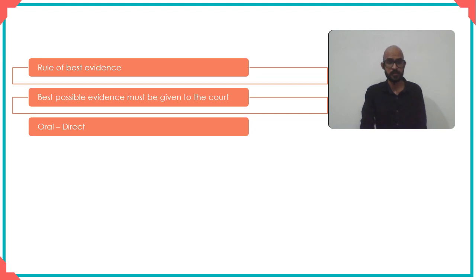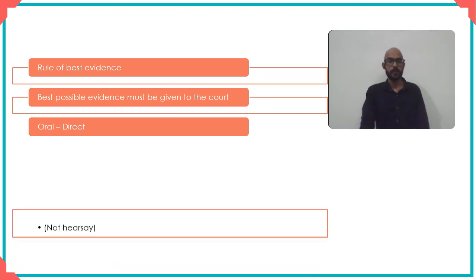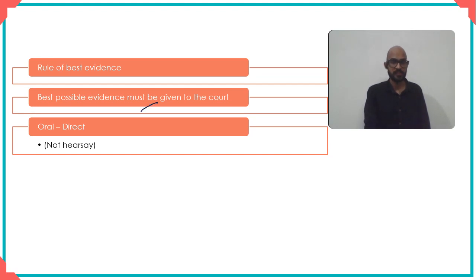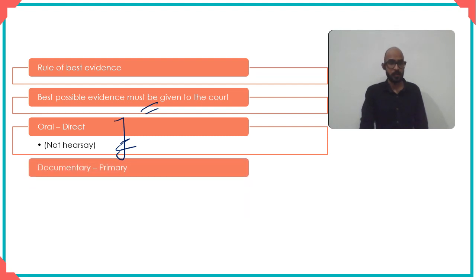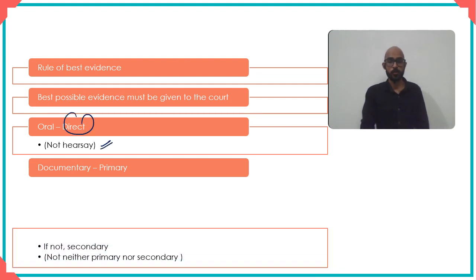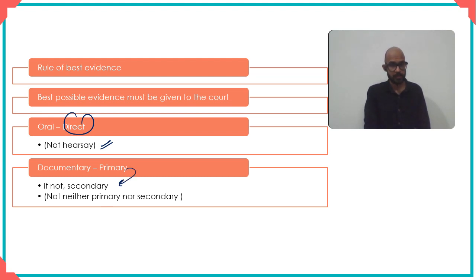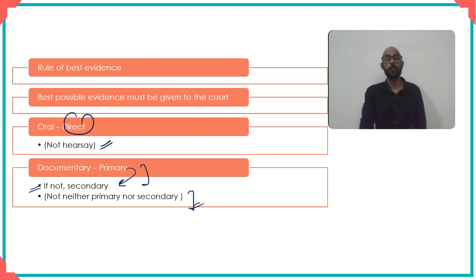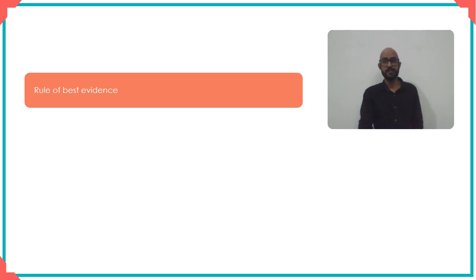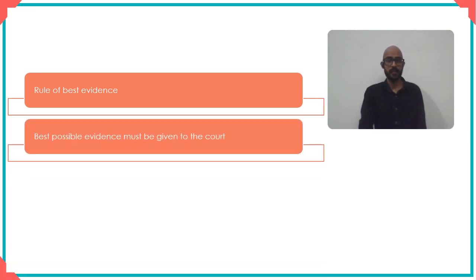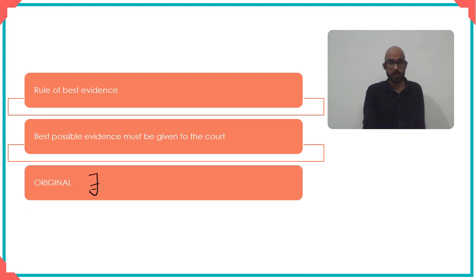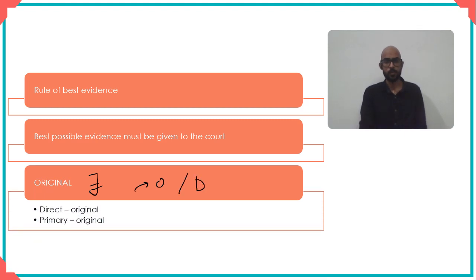That is one of the fundamental cardinal principles of the law. How that translates is that oral evidence should be direct — it should not be hearsay. And when you talk about best evidence in terms of documentary evidence, it should be primary. So oral evidence should be direct and not hearsay; documentary evidence should be primary, or if you cannot get primary, then secondary.